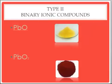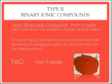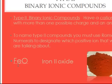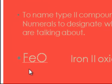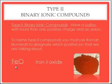This time we're going to try type 2 binary ionic compounds. Type 2 are different because the cation — the metal — can have more than one charge. And when that happens, we must give the charge in the form of Roman numerals in the name of the compound. Let me show you iron on the periodic table.